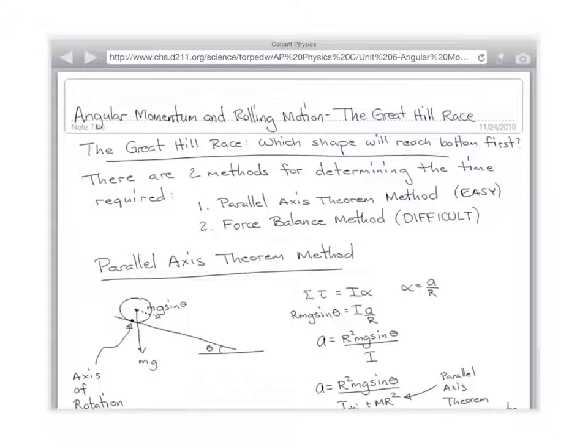If you knew the acceleration and you knew the distance, what's the initial velocity? Zero. Could you figure out the time? How? Kinematics. D equals VIT plus one-half AT squared. That would give you a time, right?